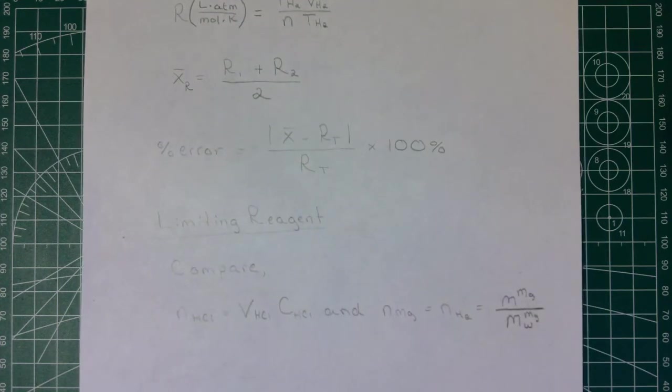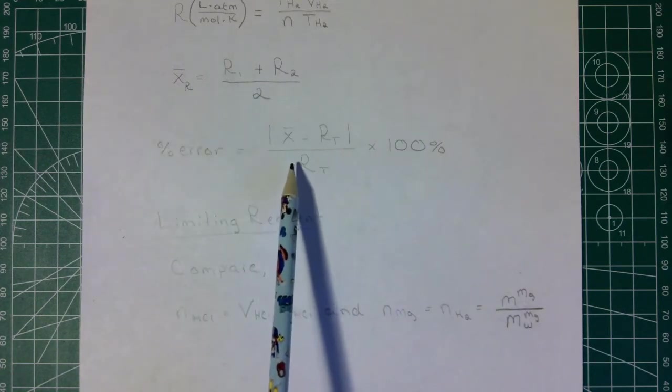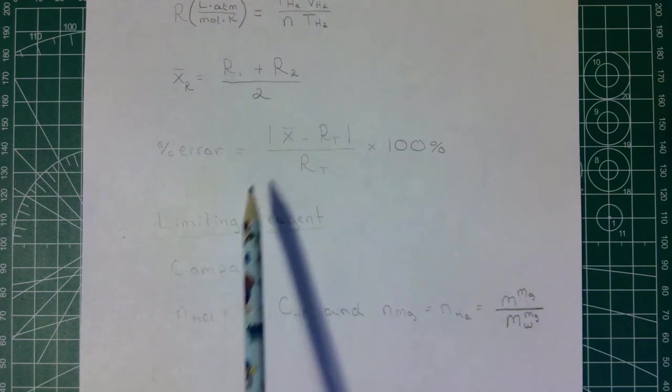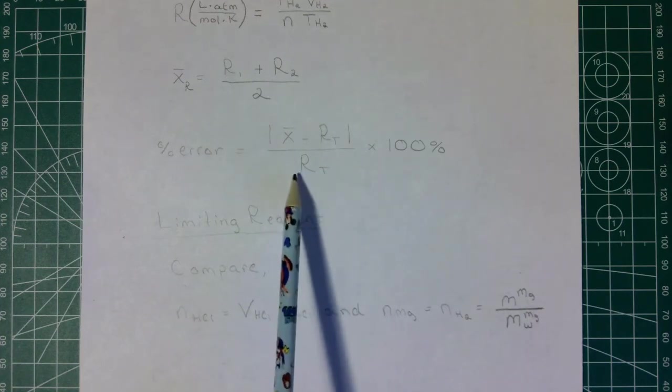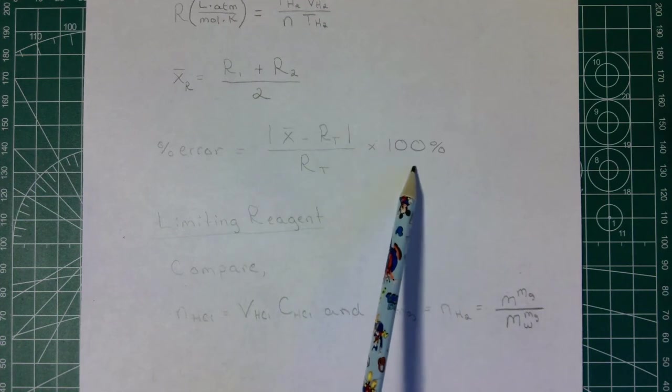Next we'll calculate a percent error. So we're going to take our average that we just calculated, subtract out our theoretical R value. We'll have the absolute value of that, so we have a positive, and divide that by our theoretical R value, multiplying that by 100 percent, and we'll have our percent error.